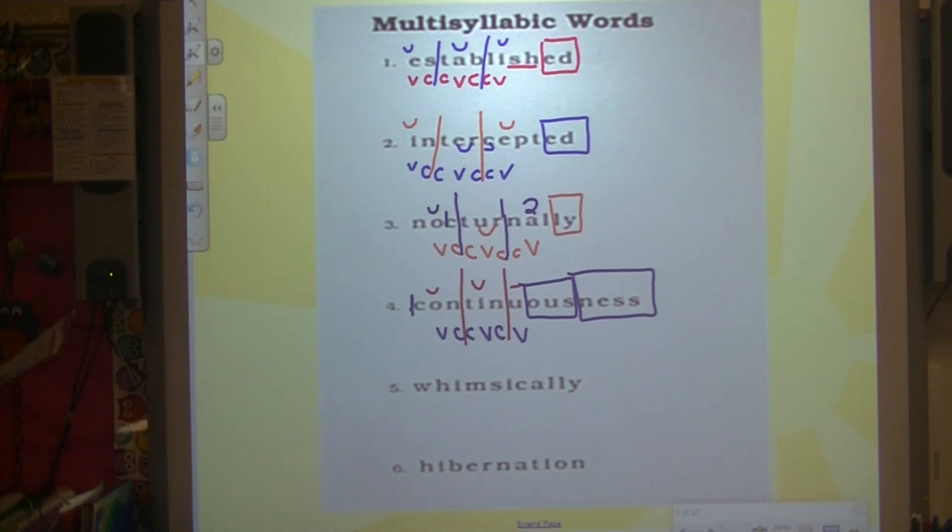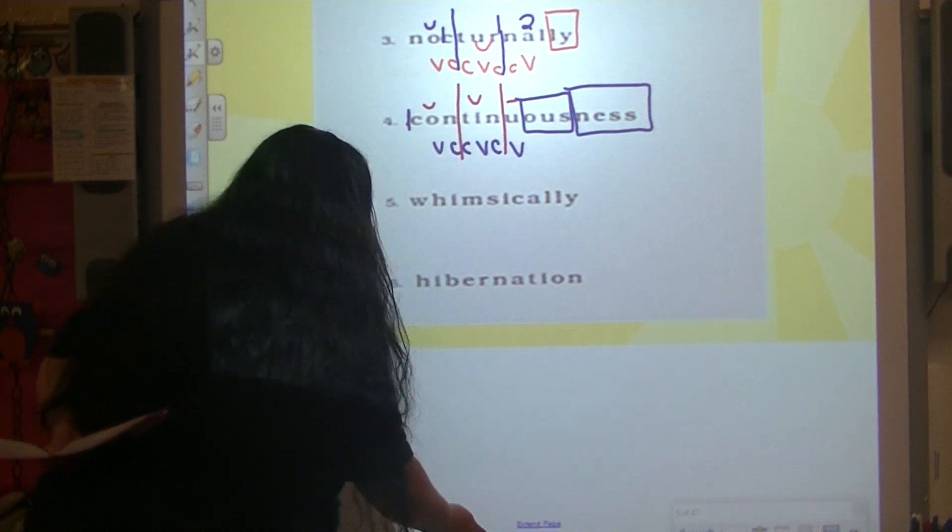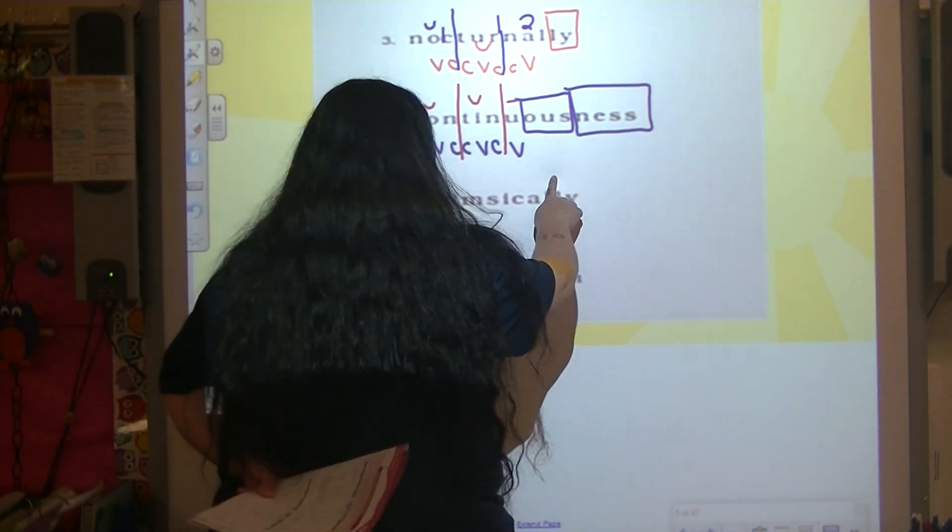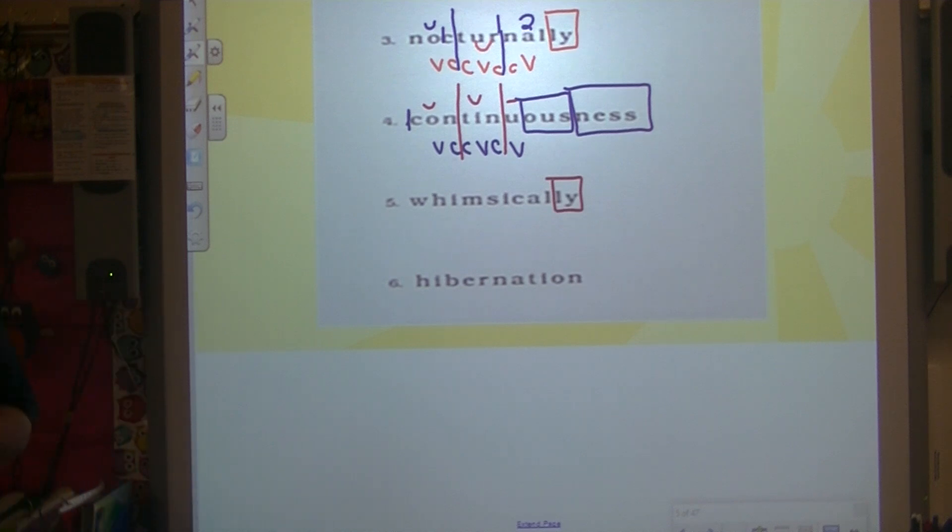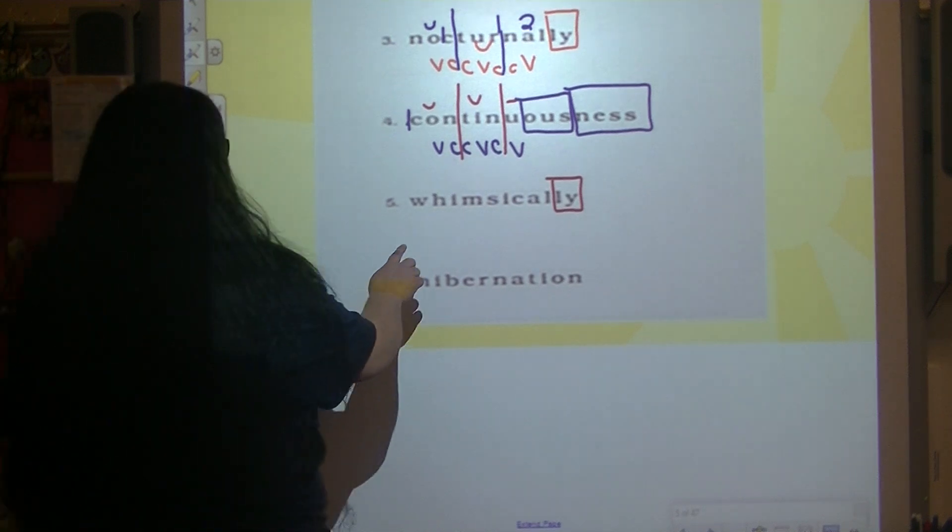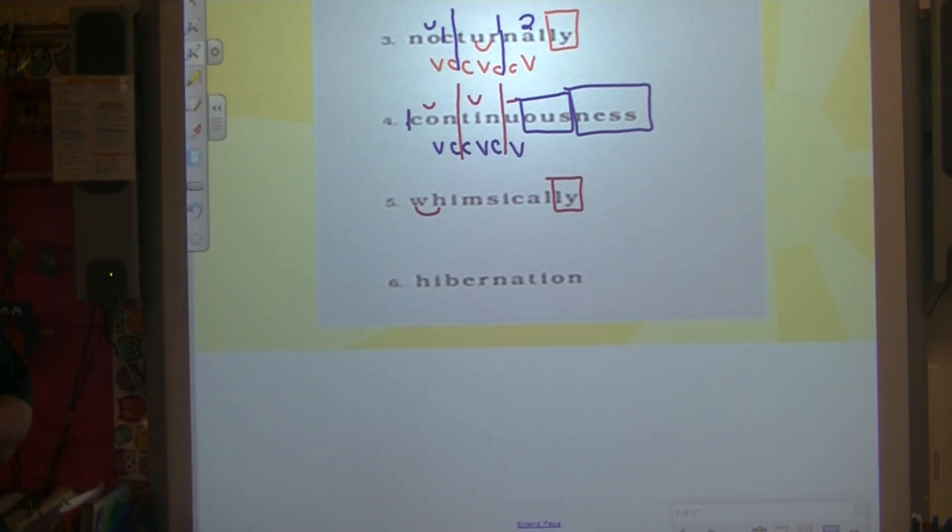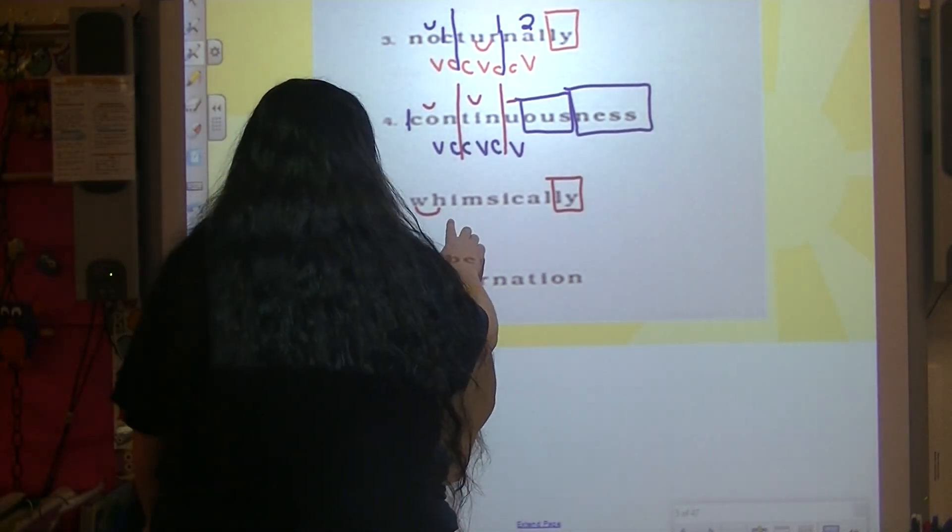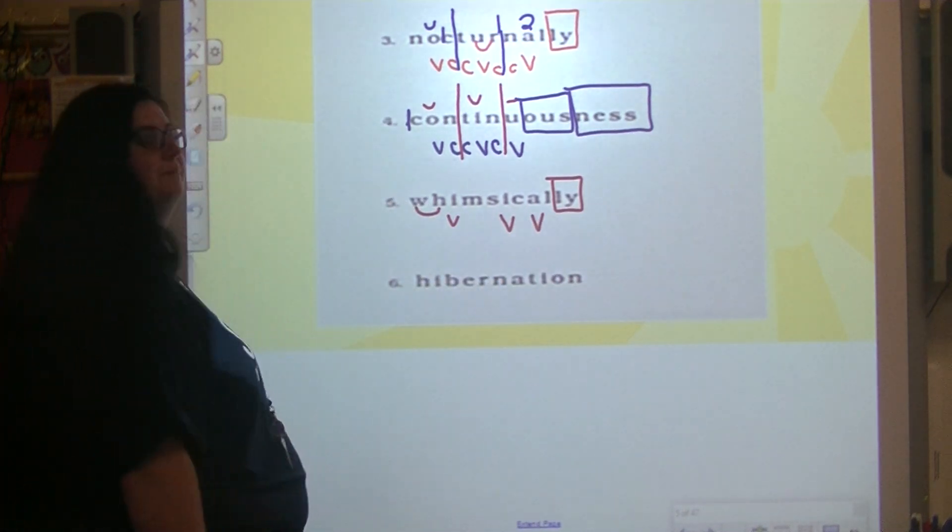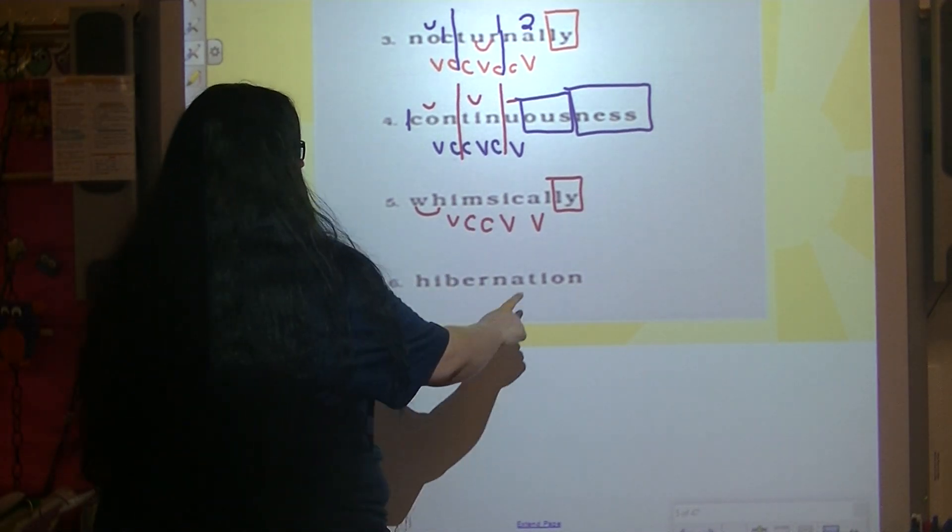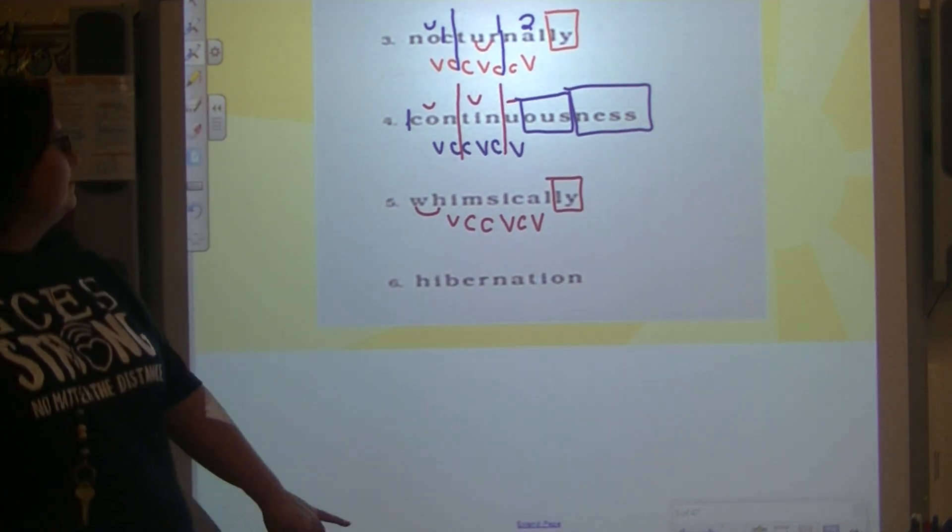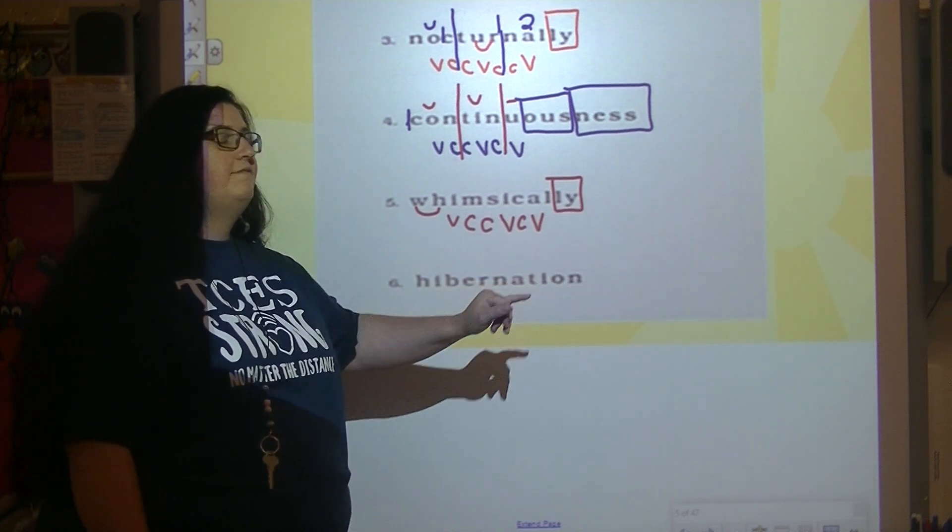Number five. Do we have a final stable syllable or a suffix? Alright, we have a suffix, L-Y. Any coding that we can do before we look at the vowels? Combination W-H says W. Now, let's look at our vowels. I, I, and A. We have an M and an S, which are consonants, and a C, which is a consonant. So you have a vowel, consonant, consonant, vowel, consonant, vowel pattern.